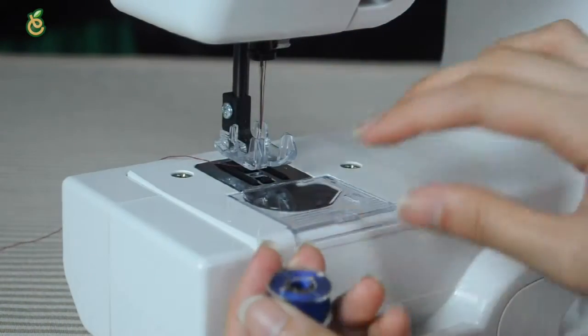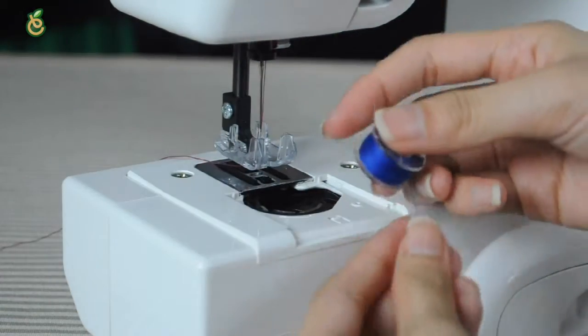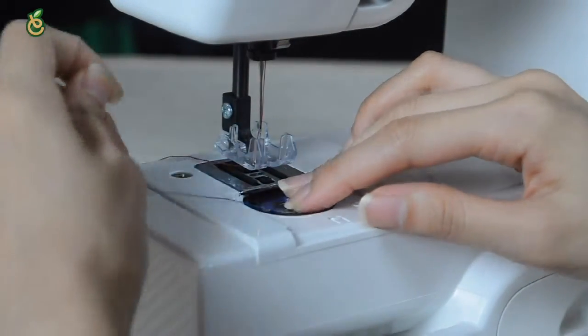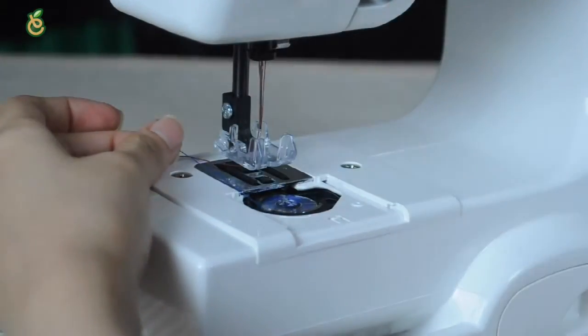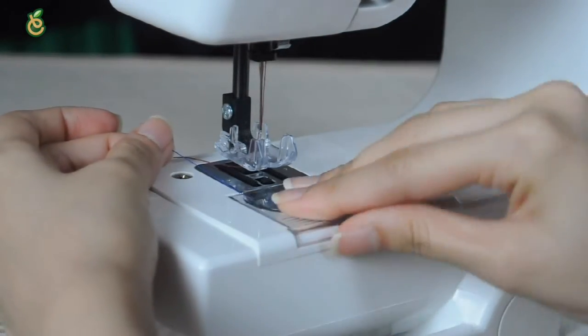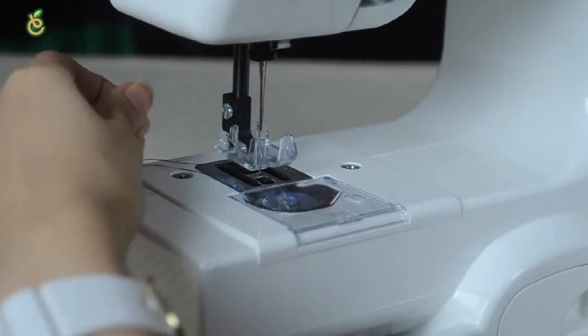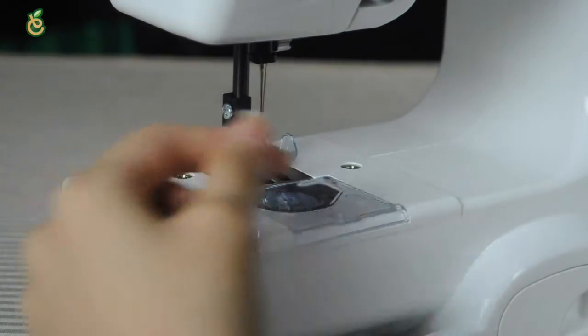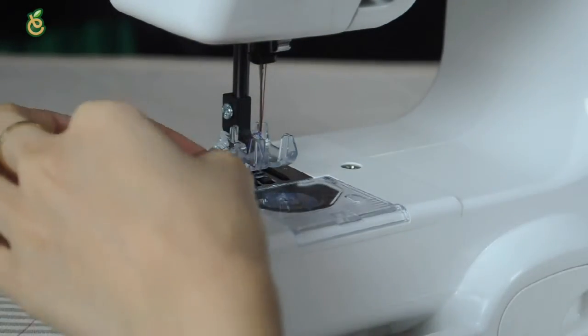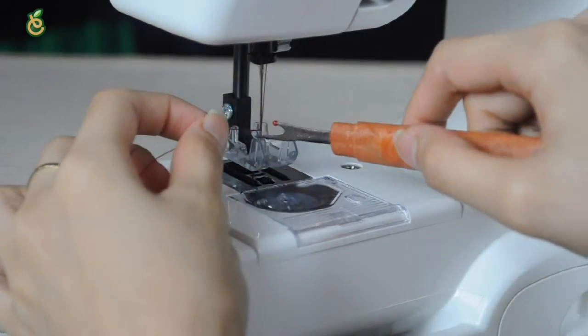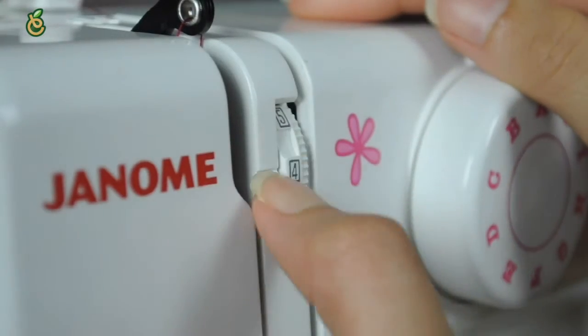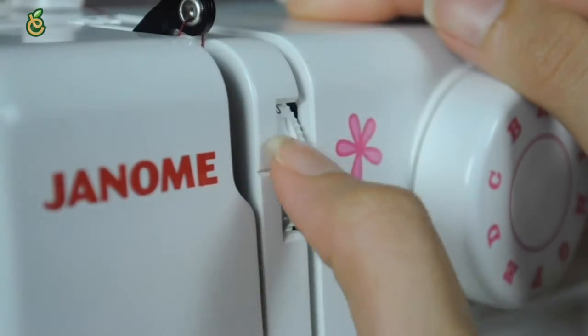Adjusting the needle thread tension: To show more clearly how the bobbin thread works, I will change the bobbin thread to blue colour and remain the red colour on top. The ideal thread stitch has thread locked between two layers of fabric as illustrated. The tension required for adjustment depends on the stiffness and thickness of the fabric, number of fabric layers, and type of stitch.